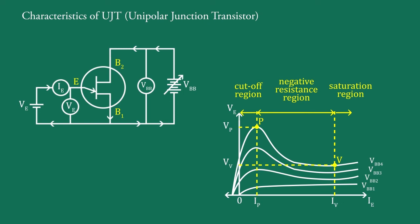These are the typical family of emitter characteristic curves of a UJT for various values of VBB.